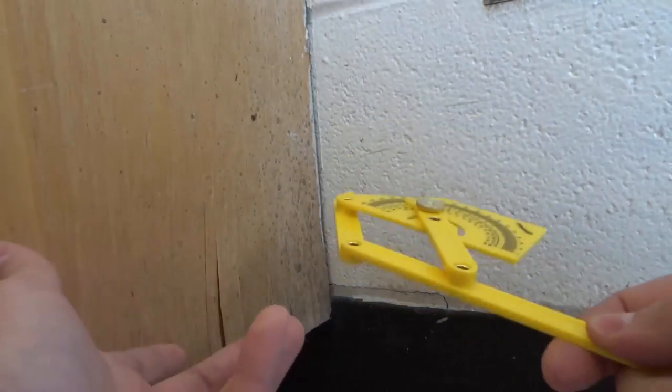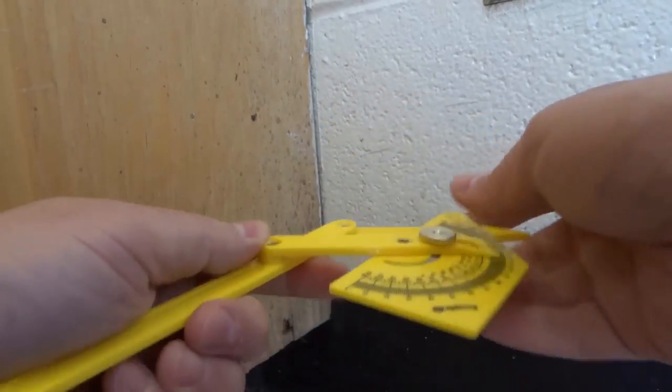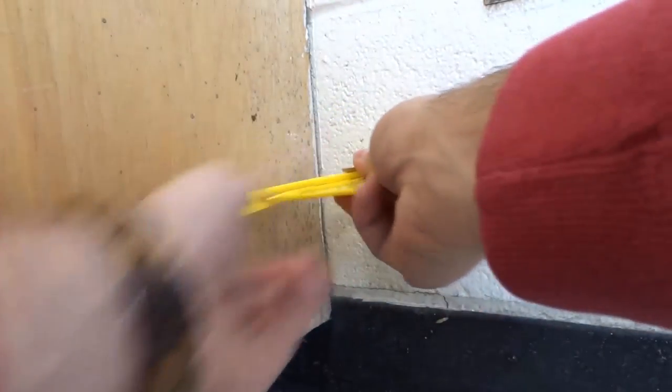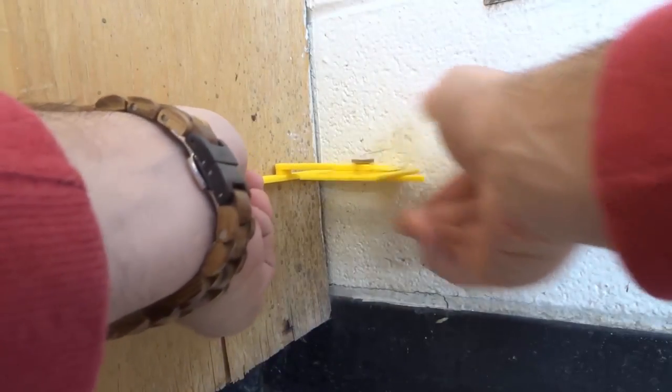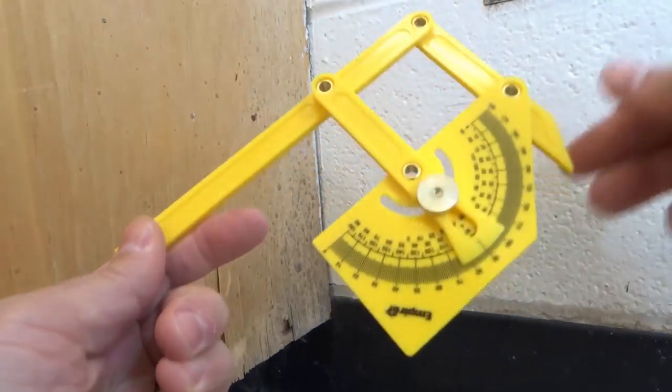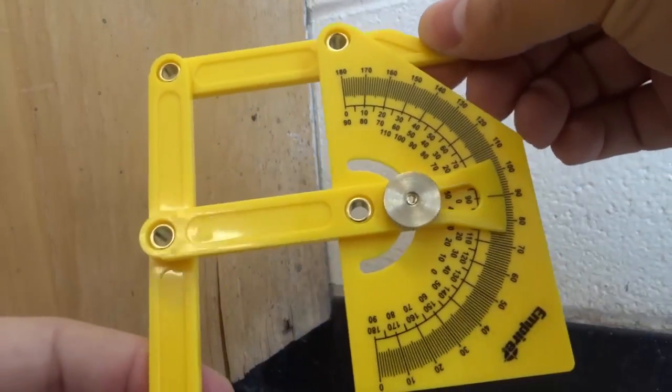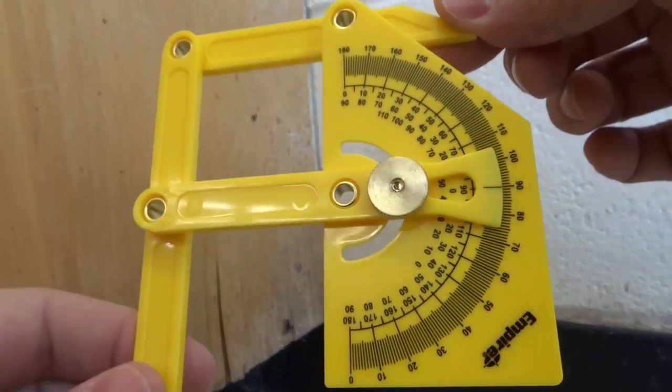So right now I'll just move it to a random angle. What I would do is I would simply press it into the corner and that's going to give me the angle. So right now it's in the corner. Now I can remove it and you can see that this corner is at exactly a 90 degree angle.